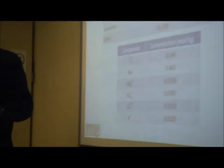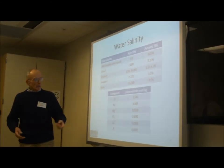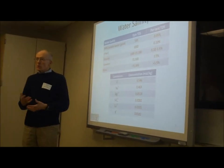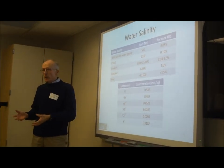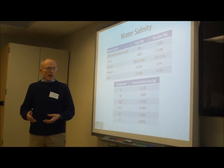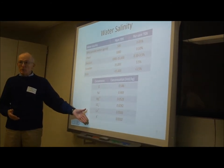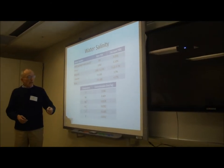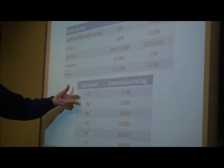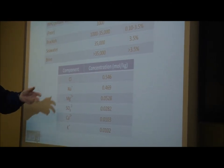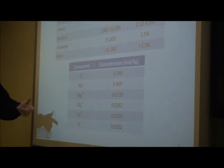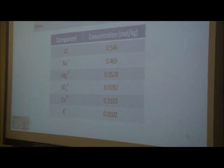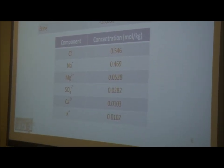Sodium chloride — table salt — in solution exists as sodium ions and chloride ions. Seawater is often thought to be salty and people think of table salt, but in fact seawater contains many more cations and anions. Sodium chloride is by far the most common single salt, but there's also magnesium chloride, calcium chloride, potassium chloride, and sulfates as well in seawater.